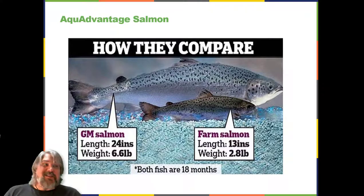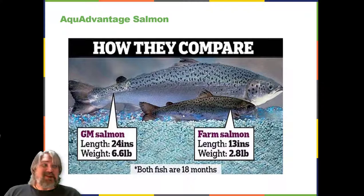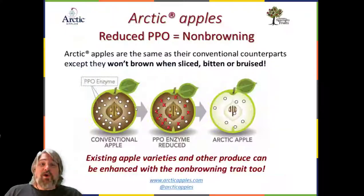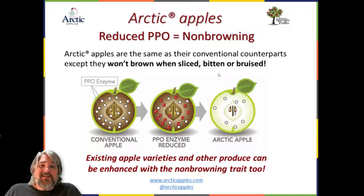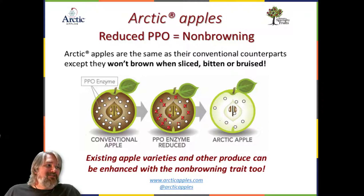Another product that Canadians are currently enjoying is the AquaAdvantage salmon. These are salmon modified to grow much larger — both fish shown are 18 months old, but the AquaAdvantage salmon is significantly larger and ready for market inside of 18 months. This is not yet approved for consumption in the United States. One new GMO that is approved for consumption in the United States is the Arctic apple — non-browning apples. Conventional apples have a PPO enzyme that turns them brown, but in the Arctic apple the capacity to make that enzyme is absent. So apple slices will not brown, eliminating the need for additional treatments to prevent browning.